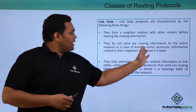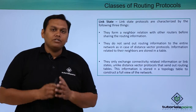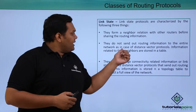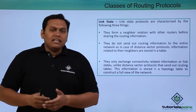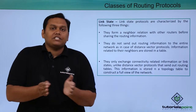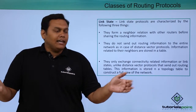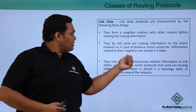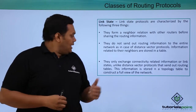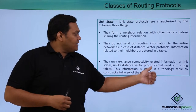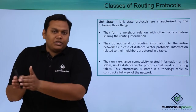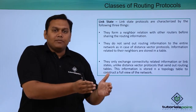Unlike distance vector protocol, link state protocols do not send routing information to all neighbors immediately. First, connections between neighbors must be established. Information related to neighbors is stored in a separate neighbor table, and they only exchange link state information in a separate topology table.